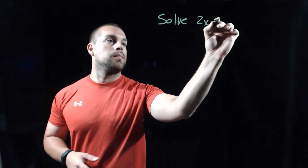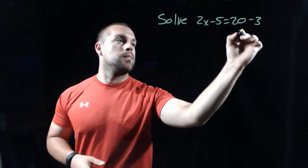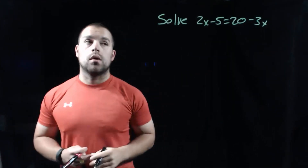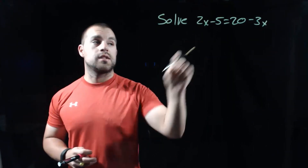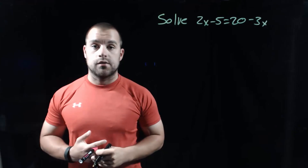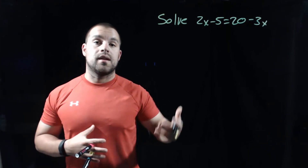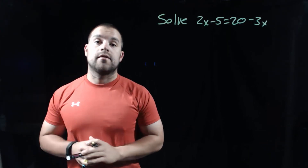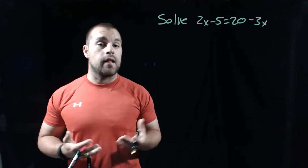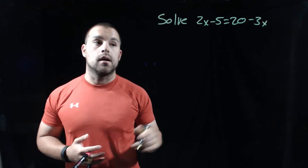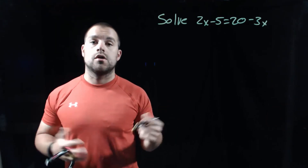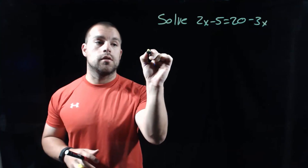In our first example, we're going to solve an equation using those algebraic properties. The equation we're going to solve is 2x minus 5 equals 20 minus 3x. When we're solving this equation, as we take each step, we're going to have to provide a valid reason for each step that we take. So in order to show this, we're going to make ourselves a T-chart.